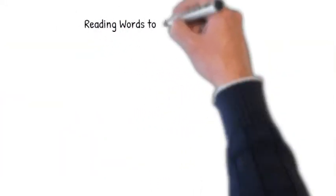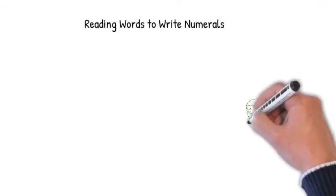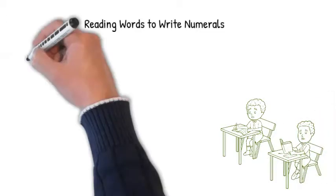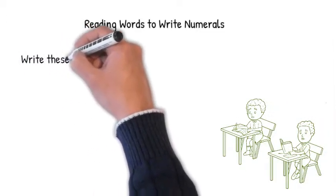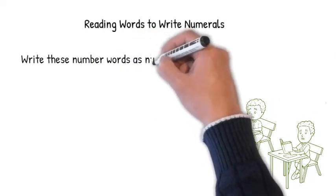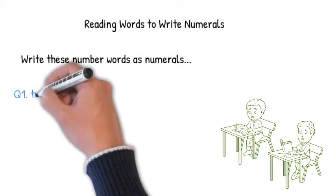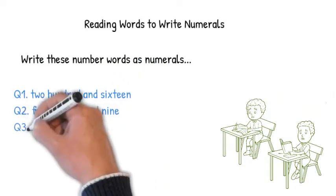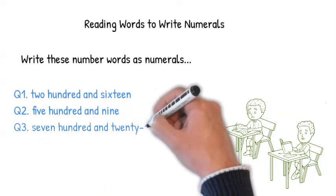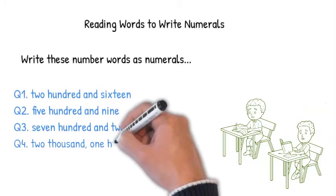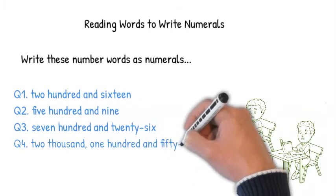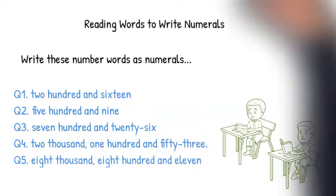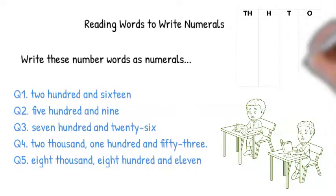Okay, let's now try some questions the opposite way around. So instead of reading the number as a numeral and writing the number in words, we are going to read the number as words and write the numerals. So let's look at this. 216, 509, 726, 2,153, 8,811. Remember saying this out loud will make it easier and you may also want to use a place value chart.